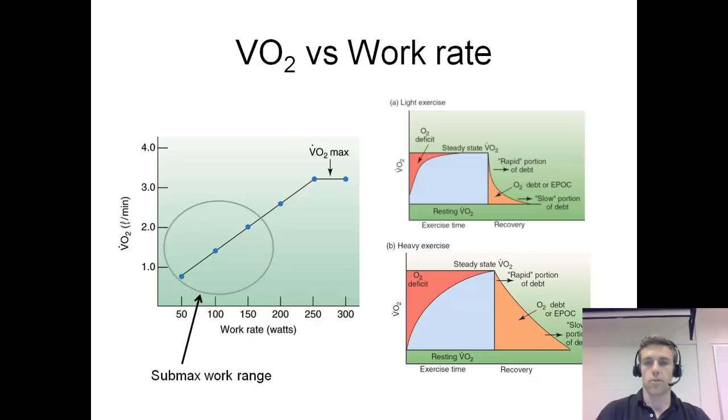You notice in these two graphs, you have light exercise versus heavy exercise in the top and the bottom graph. We can see on the top one, the oxygen deficit lasts a certain amount of time. But in the heavy exercise, it's debatable that it looks like the person never really reaches steady state. The oxygen deficit occurs during the whole bout of exercise.